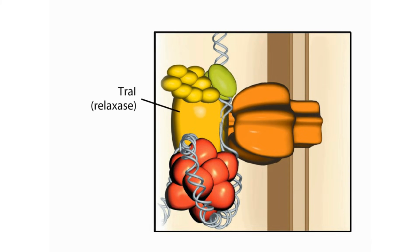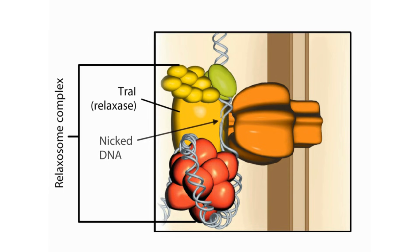TraI, also called relaxase, works in combination with other F-factor encoded proteins to form the relaxosome complex. Here the relaxosome is shown wrapped in the F-factor DNA at the membrane bridge. The relaxase enzyme nicks the phosphodiester backbone at Ori-T.